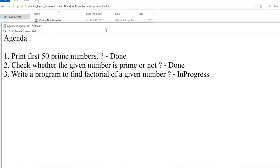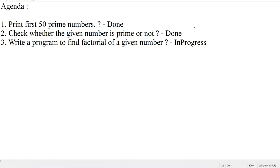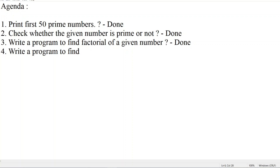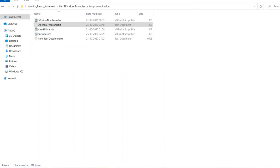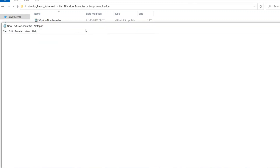Let me write an agenda for today. Yesterday's agenda was: write a program to find the factorial of a given number — let us click done on that. For today, let me write another agenda: write a program to find Fibonacci series. Let us put this in progress, save the agenda, and then close it. Let me open a new text document so that we can write the program.